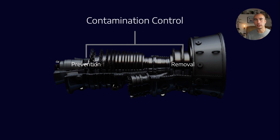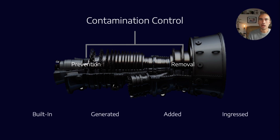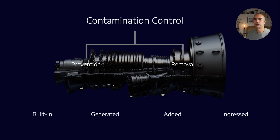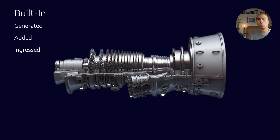Now, where do most of these contaminants come from? Well, there's a variety. I generally break them up into four categories, which we would call built-in, generated, added, and ingressed. If we look at those four categories, what are the examples of contamination points?